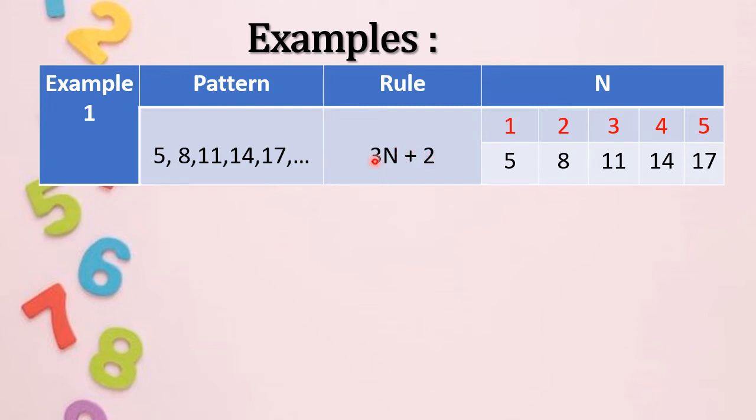Let's check if this rule that we follow is the correct way of finding the next term. Like 3 times N, which is 1, that's 3, plus 2 equals 5. Next, we have 3 times 2, plus 2 equals 8. Next, counting number is 3. 3 times N, which is 3, is 9, plus 2 equals 11.